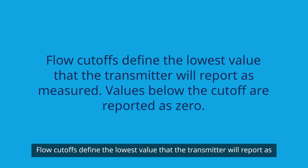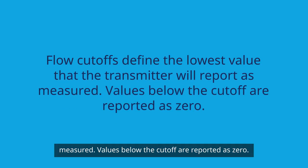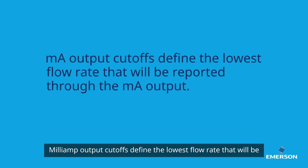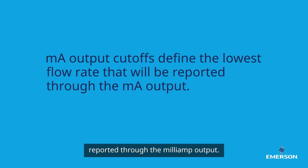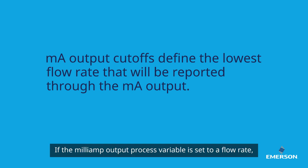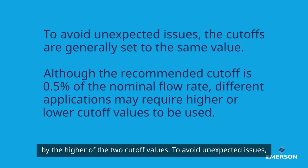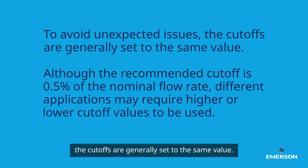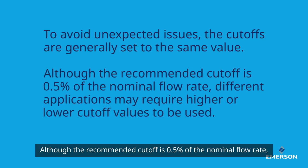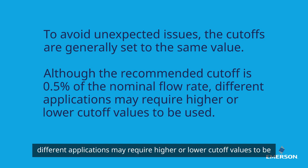Flow cutoffs define the lowest value that the transmitter will report as measured; values below the cutoff are reported as zero. Milliamp output cutoffs define the lowest flow rate that will be reported through the milliamp output. If the milliamp output process variable is set to a flow rate — for example, mass flow rate — the mass flow rate reported through the milliamp output is controlled by the higher of the two cutoff values. To avoid unexpected issues, the cutoffs are generally set to the same value. Although the recommended cutoff is 0.5% of the nominal flow rate, different applications may require higher or lower cutoff values.